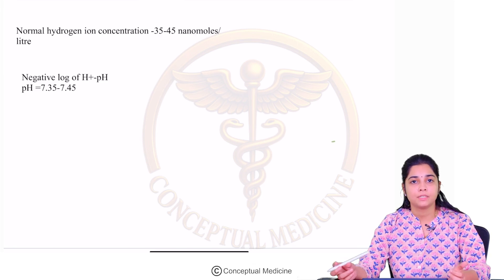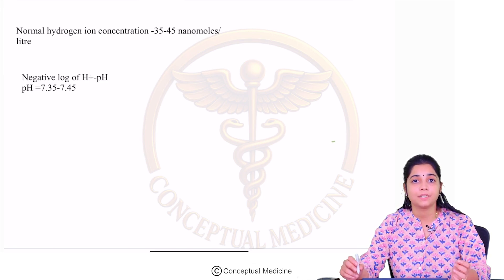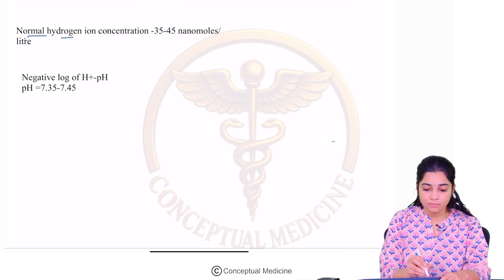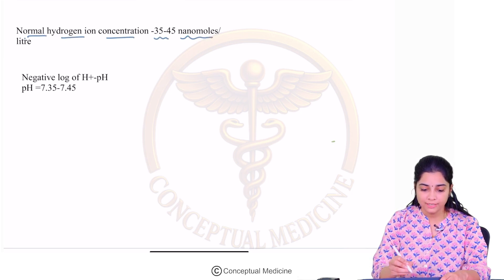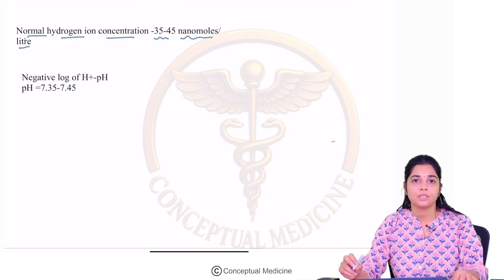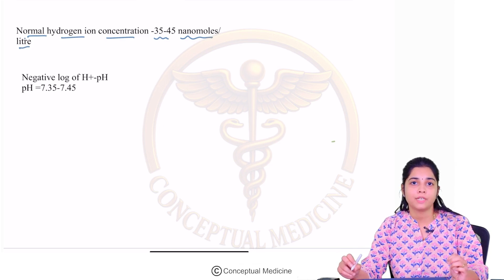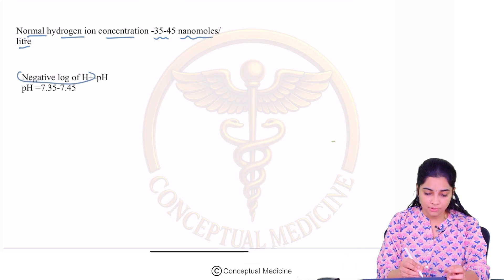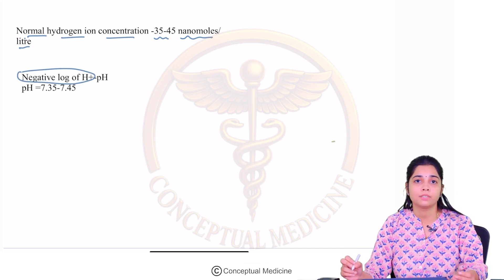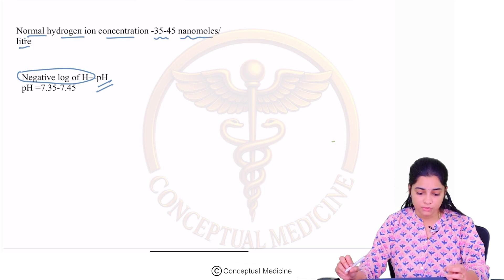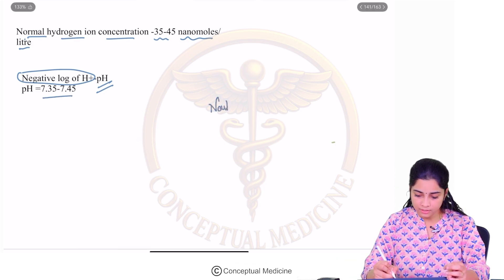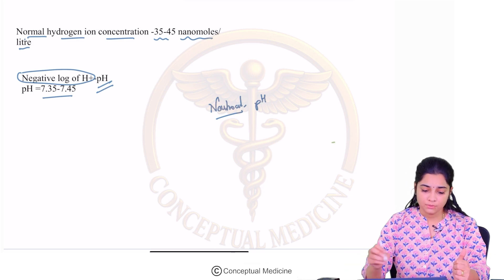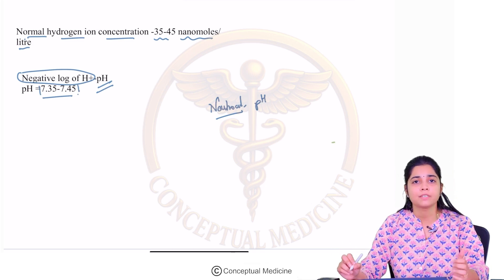Acid-base status is basically dependent on a very important molecule which is your hydrogen ion. The normal hydrogen ion concentration is about 35 to 45 nanomoles per litre. The hydrogen ion is usually measured in terms of the negative logarithm of the H+ ions, which is what we call the pH. In our body, the pH is maintained in a neutral range from 7.35 to 7.45.